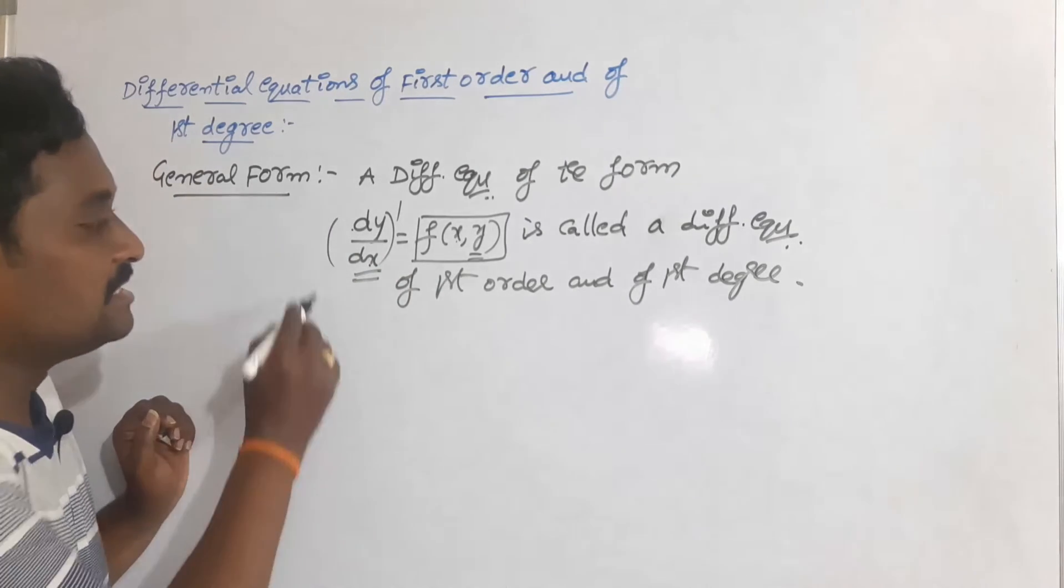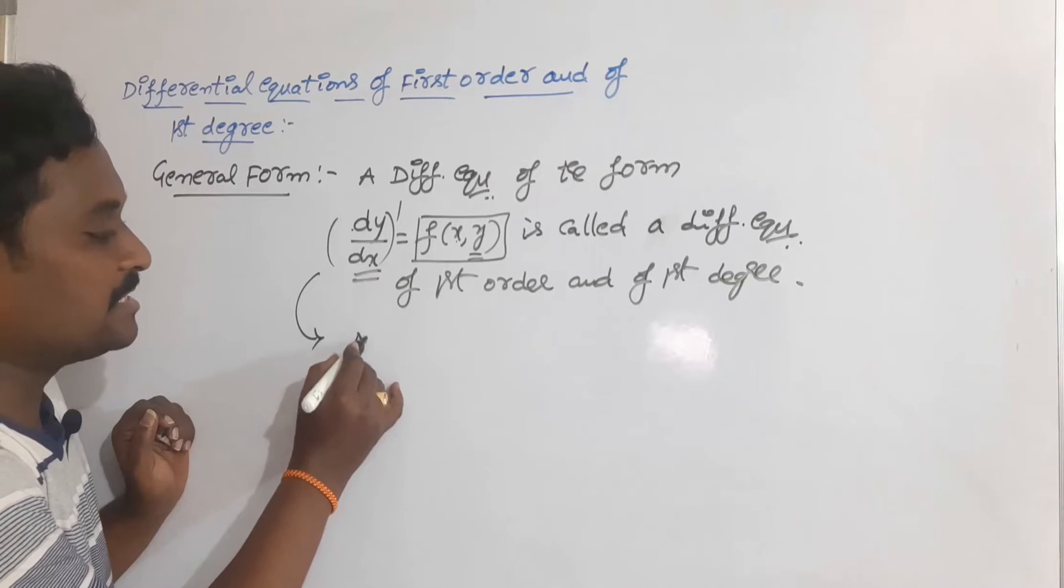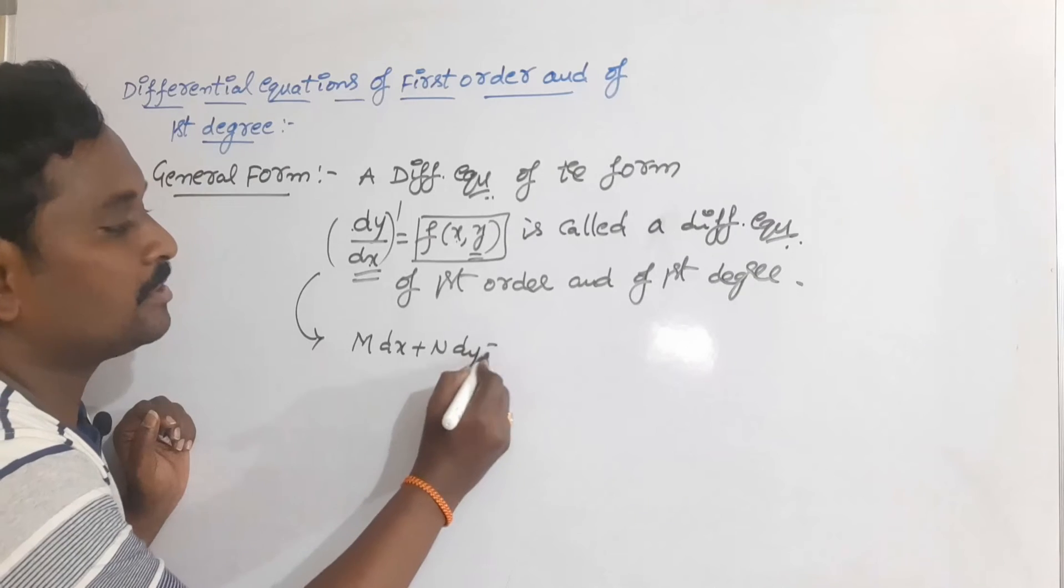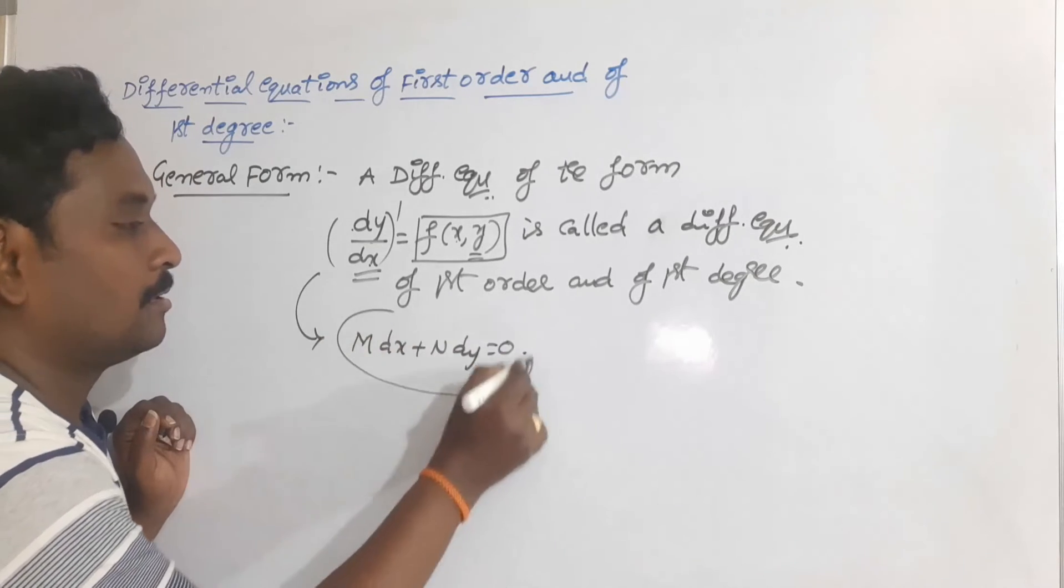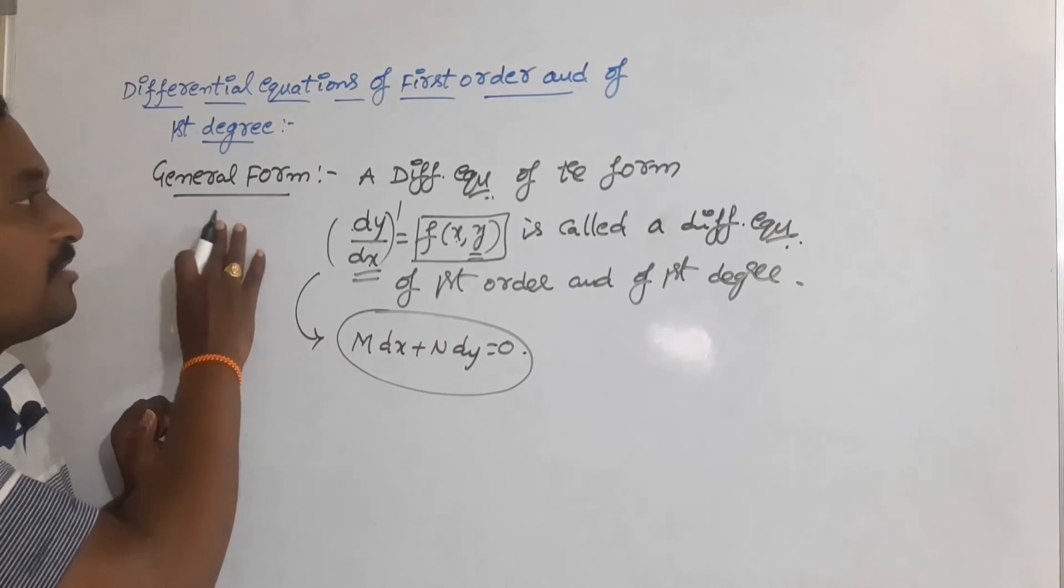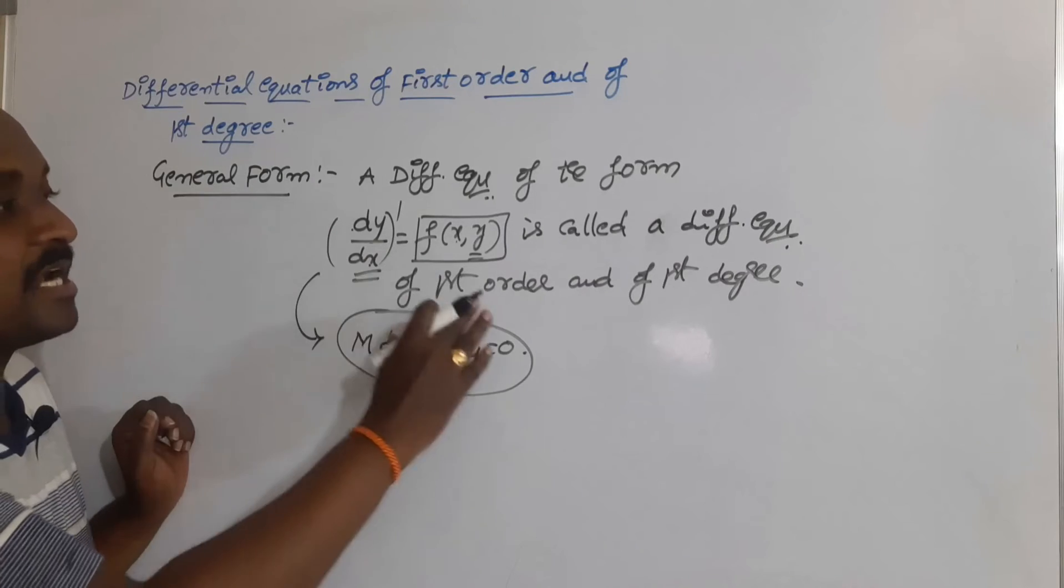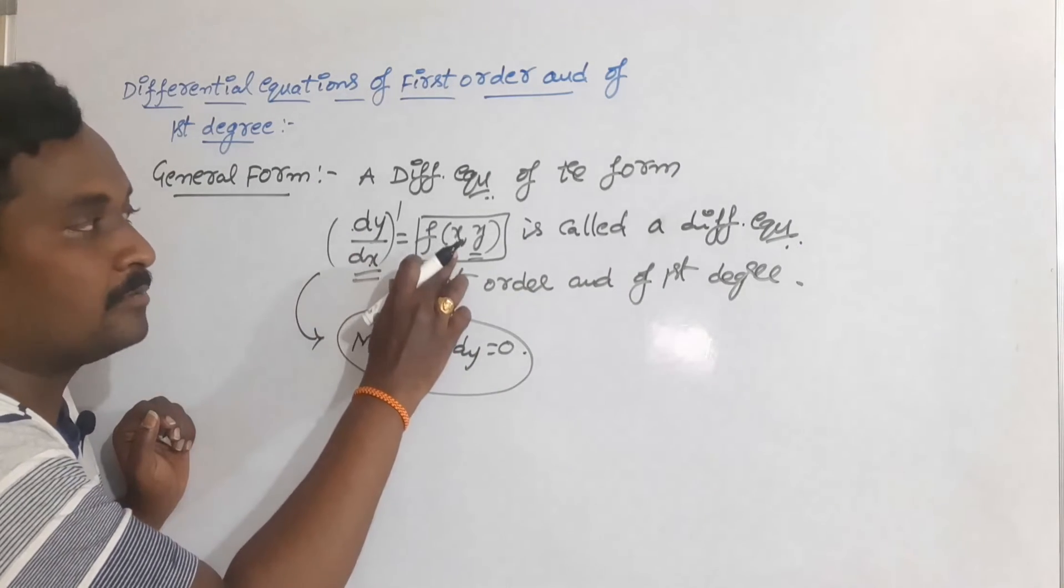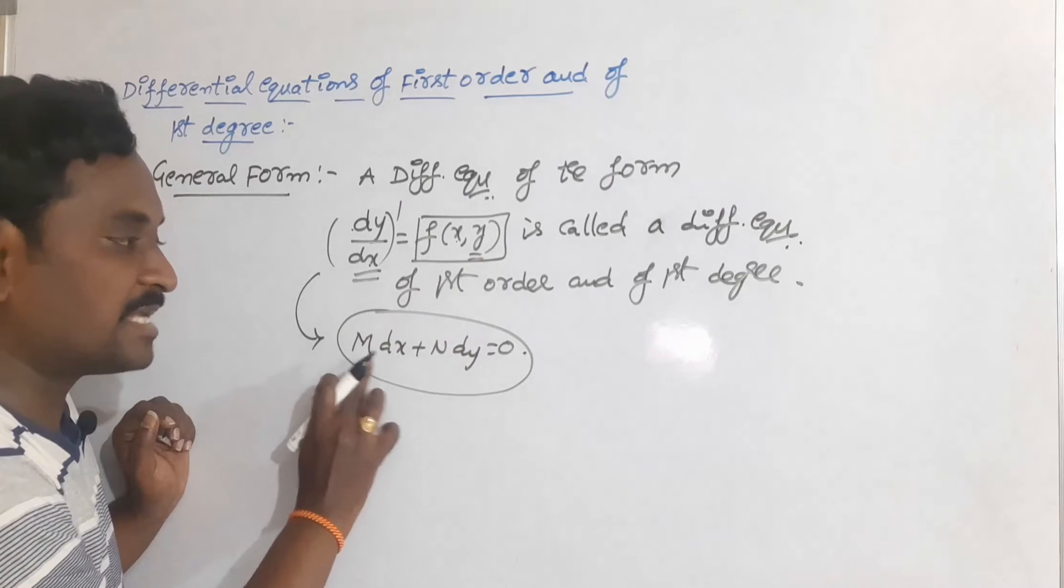Also, sometimes this equation may be expressed in the form M dx plus N dy is equal to 0. So we should conclude that the general form of a differential equation of first order and of first degree is either dy/dx is equal to something which is f(x,y), or M dx plus N dy is equal to 0.